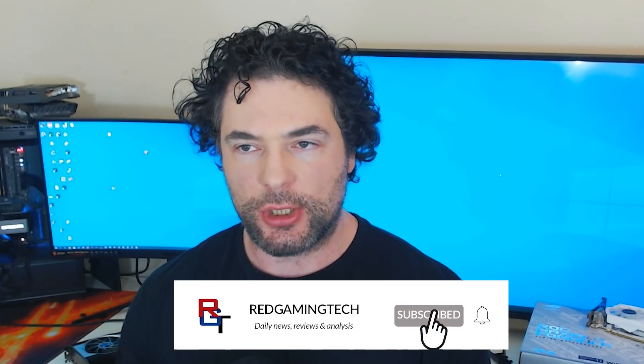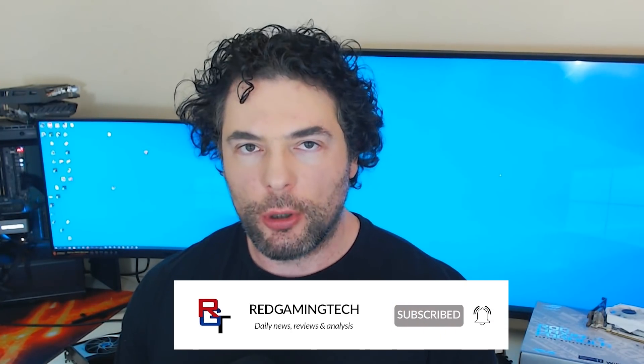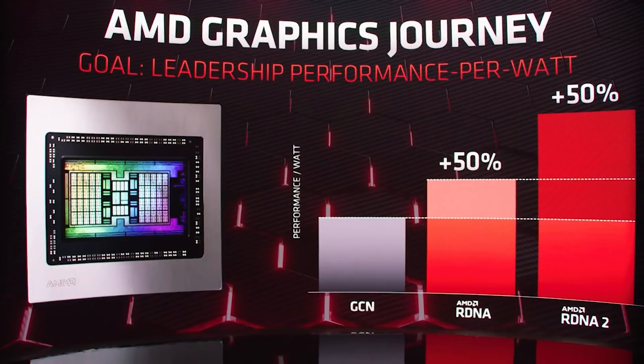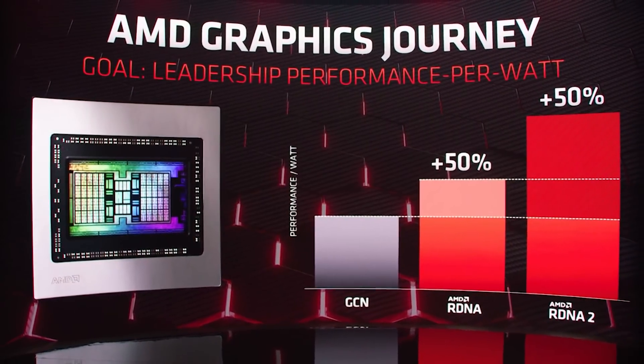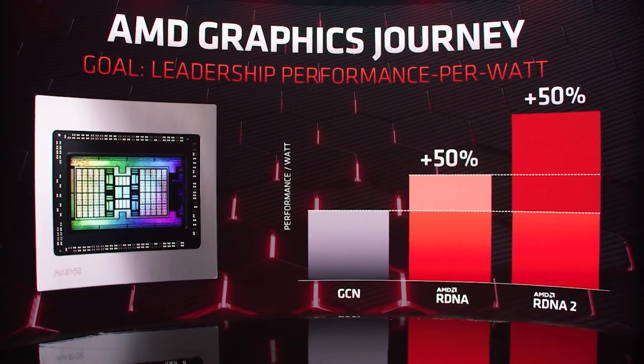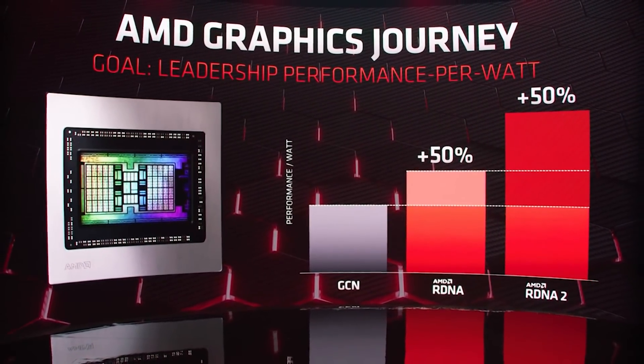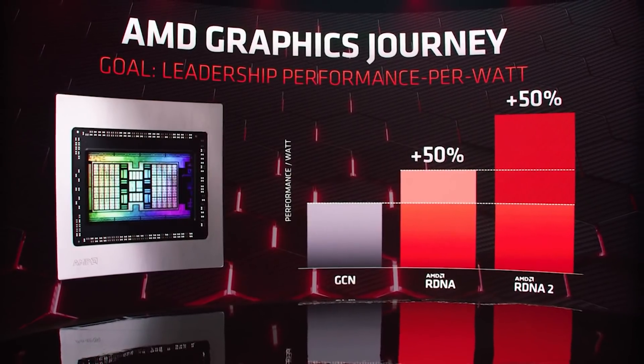Ladies and gentlemen, my name's Paul. Hope you're having an amazing day. We've got an awful lot of stuff to get through in this video, so let's kick things right off concerning AMD's RDNA3 architecture, because it may well incorporate machine learning in the form of a chiplet. Honestly, if this is true, it could be an extremely worrying thing for Nvidia going forward with the RTX 40 launch.